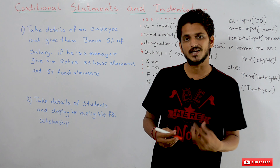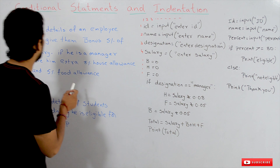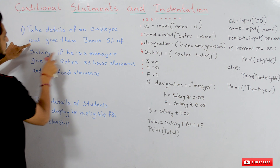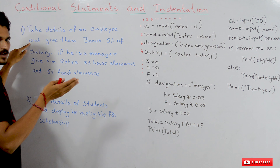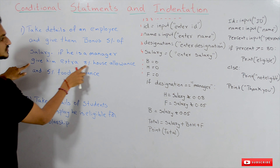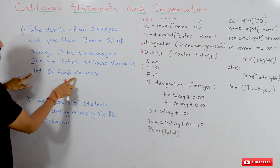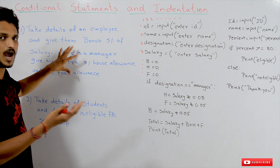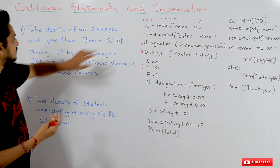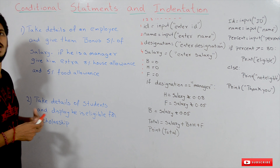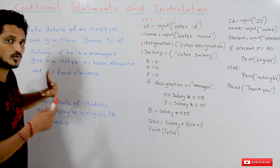Coming to today's class, we will understand by taking an example. Take details of an employee and give them a bonus of 5% of salary. Whatever the salary is, we have to give a bonus of 5%. If he is a manager, give him an extra 8% house allowance and 5% food allowance. We have to implement this logic in Python.